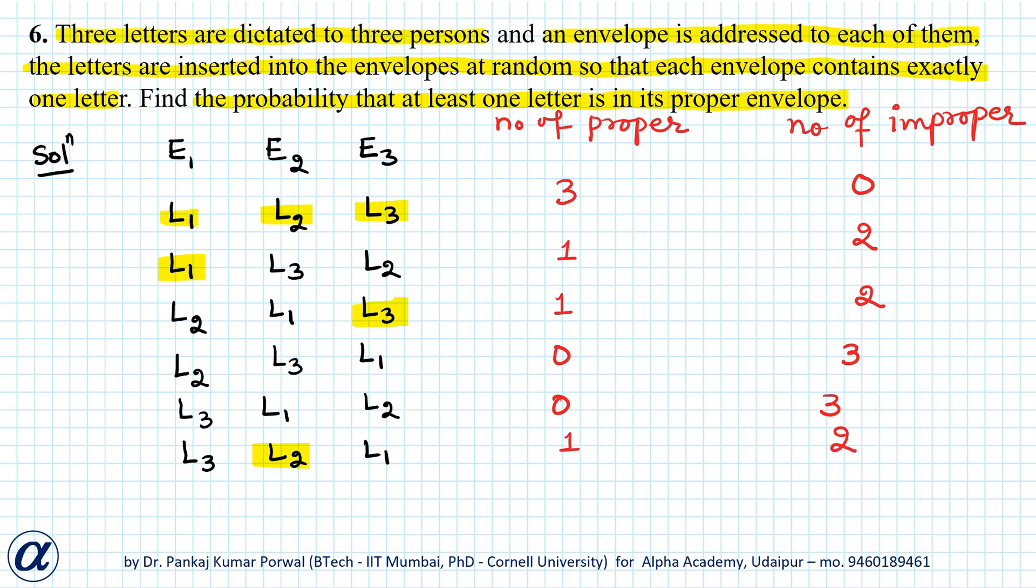Now we want to find the probability that at least one letter is in proper envelope. So that will be this case, this case, this case, and this case. That is, out of 6, in 4 cases we will have at least one letter in proper envelope. So probability that at least one letter is in proper envelope equals 4 by 6, that will be equals to 2 by 3.